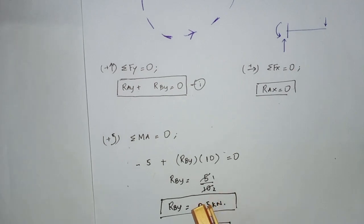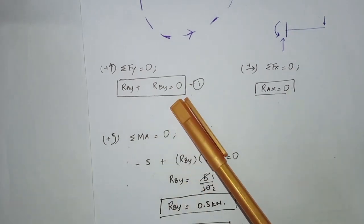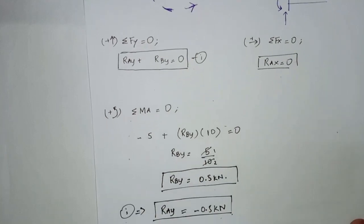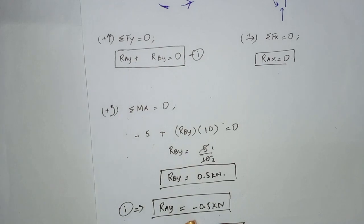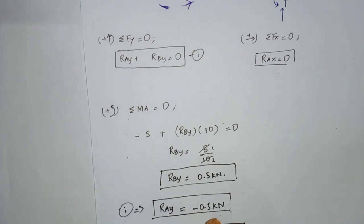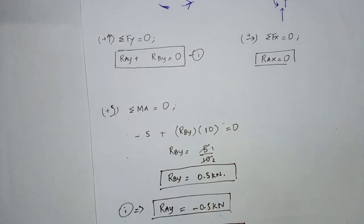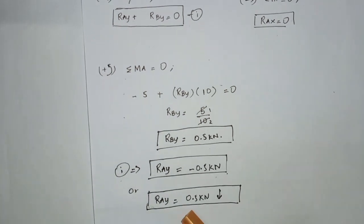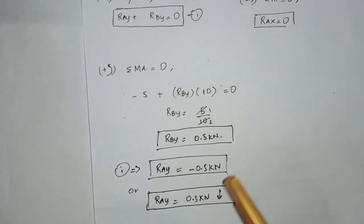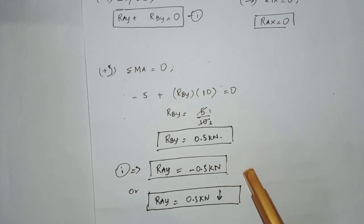Putting the value of RBY into equation one, we get RAY equal to minus 0.5 kN. The minus sign indicates that the direction we assumed for RAY — upward — was wrong; it should be downward. So you can write RAY equal to 0.5 kN acting in the downward direction.